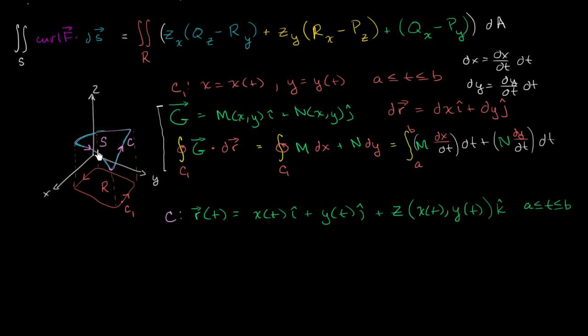Now that we have a parameterization for the boundary of our surface, let's think about the line integral—this was the left side of our original Stokes Theorem statement—the line integral over the path C of F, our original vector field F, dot dr.